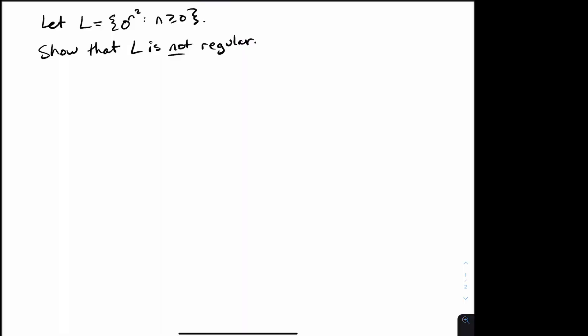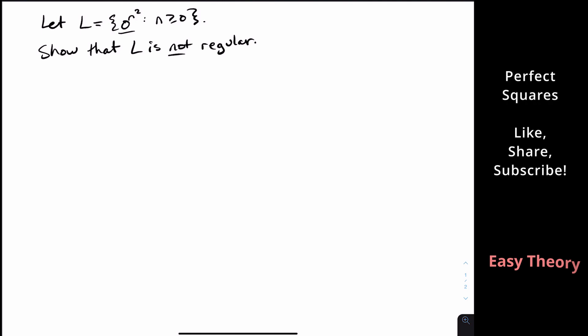Hello and welcome back to another edition of Easy Theory. Today we're going to be looking at this language, which is the set of all perfect squares — specifically, all strings whose length is a perfect square. So we could have zero zeros (the empty string), a single zero, four zeros, nine zeros, etc.